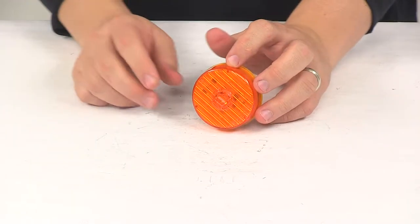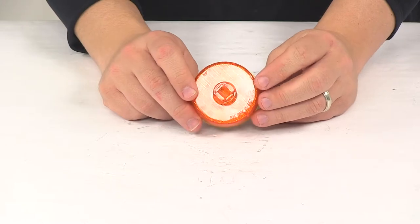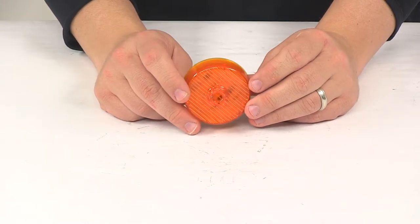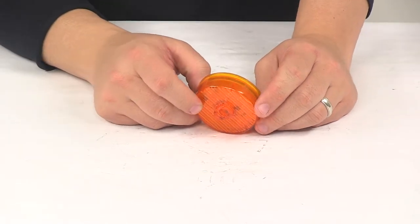Today we're going to be taking a look at the Optronics round LED trailer clearance and side marker light. This is an amber round light that functions as a clearance and side marker light.